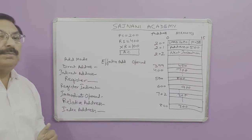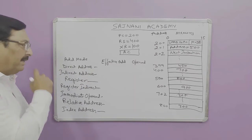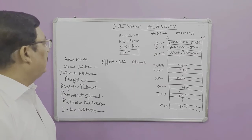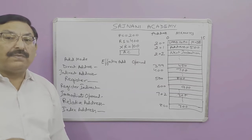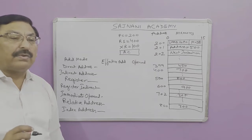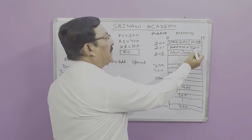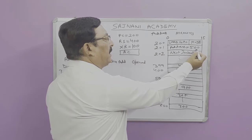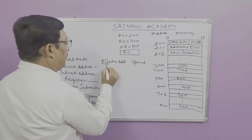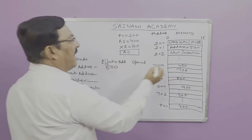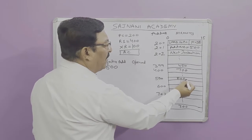Now let us calculate the effective address and operand using each addressing mode. In direct addressing mode, the instruction itself contains the address of the operand. Here the address given is 500, so the effective address remains 500. At address 500 you will find the operand, which is 800.